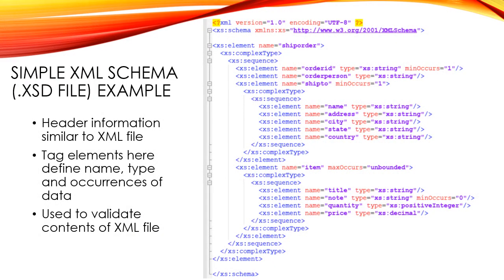Here is an example of an XML schema file. The header information at the top is very similar to what you'd see in an XML file, except that it indicates there is a schema related to it as well. The tag elements here define their name, their type, and the number of occurrences of each piece of data. All of this is used to validate the contents of the document.